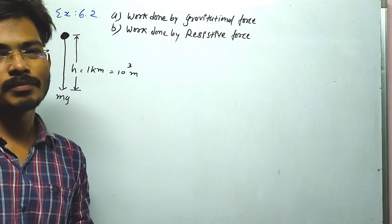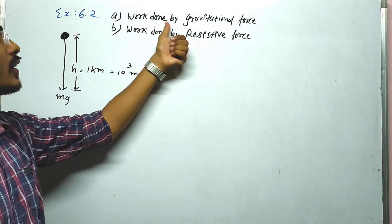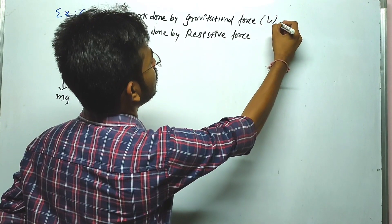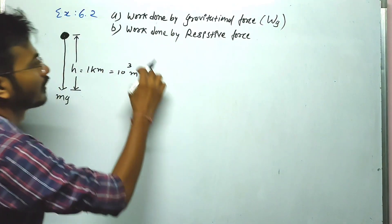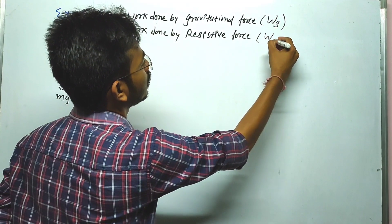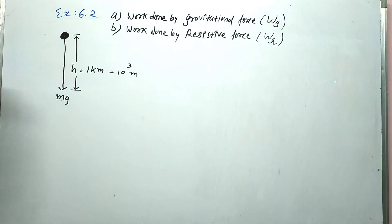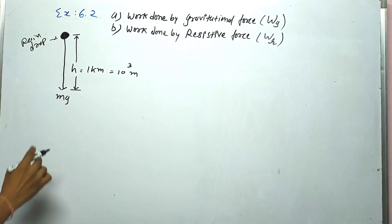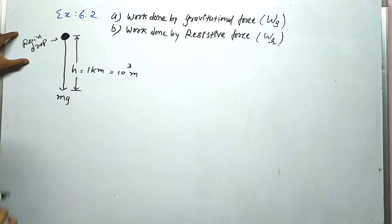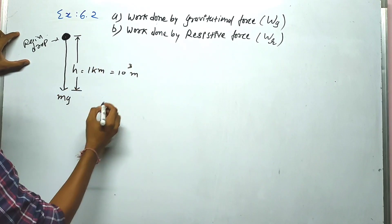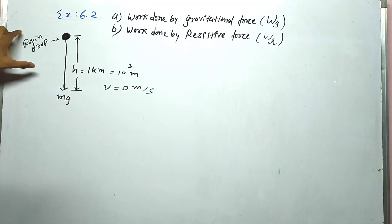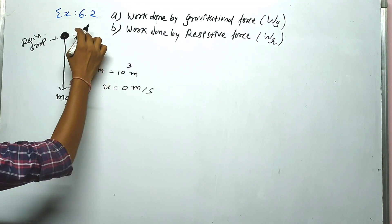In this example, we have to find work done by gravitational force, WG, and work done by resistive force, WR. We are talking about a raindrop. Let's assume we have our raindrop, initially with velocity 0 meters per second, at height 1 kilometer.